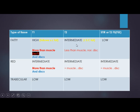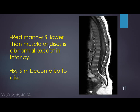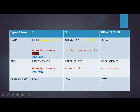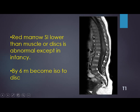On T2, fatty marrow is intermediate — less than subcutaneous fat, less than muscle, and less than normal disc. Red marrow on T2 is intermediate, the same as muscle and disc, but should not be less than muscle. Red marrow signal lower than muscle or disc on T1 is abnormal. The exception is in infancy only — in infants, red marrow signal may be less than muscle and is still normal.